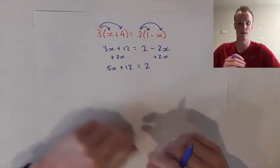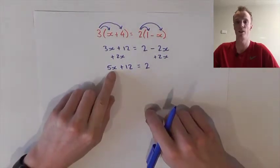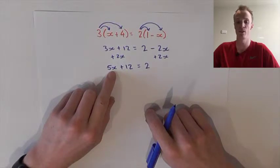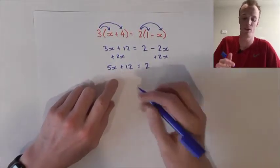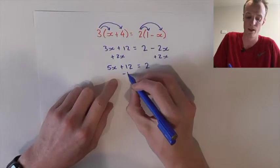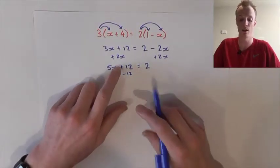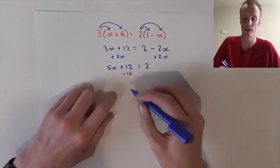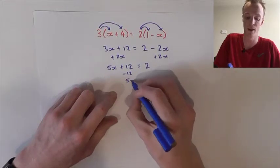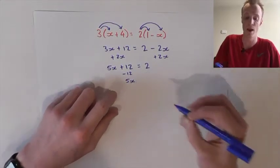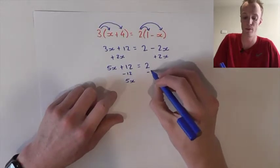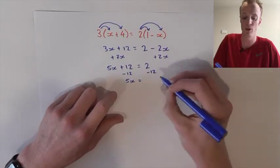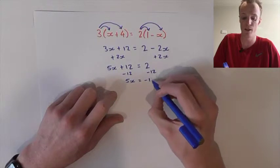From here I must now isolate this x value on the left-hand side. In order to do that I must perform the inverse operation of this plus 12, which is to take 12. Subtracting 12 from the left-hand side will cancel these two values out, leaving us just with this 5x. However, to keep our equation balanced we must also subtract 12 from the right-hand side. 2 subtract 12 will give us negative 10.